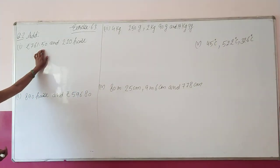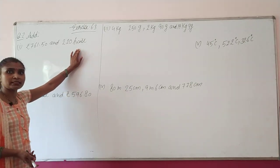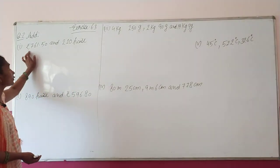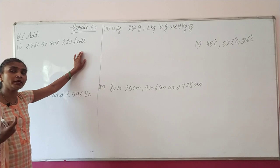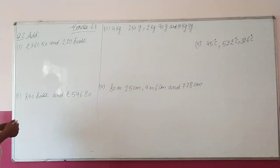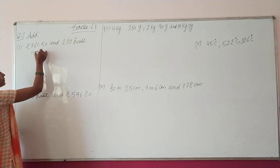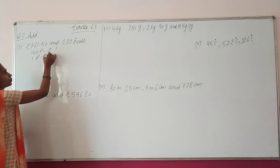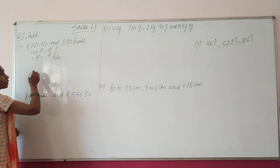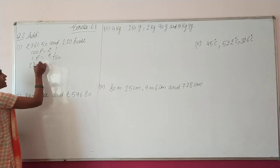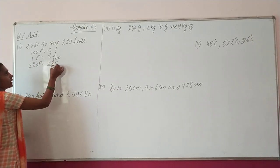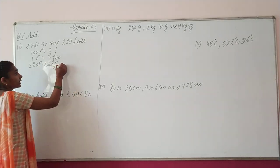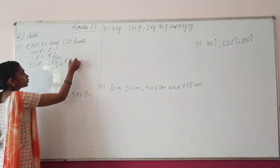One number is given in decimal (rupees), but the second number is given only in paise, not in decimal. So we need to convert both to rupees. In 100 paise there is 1 rupee, so 1 paisa equals 1/100 rupee. We have 220 paise, so 220 divided by 100 becomes Rupees 2.20.